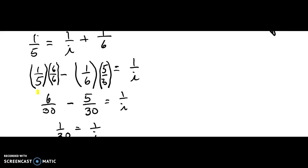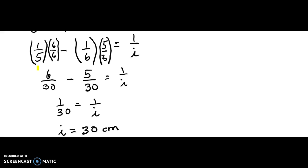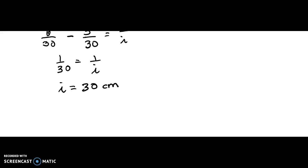Then you subtract the two fractions. You only subtract the top part, because the bottom is a common denominator and it stays. And then you can flip both sides and then find the value of the image distance in centimeters.